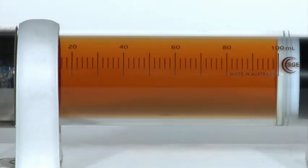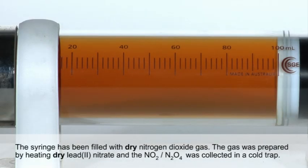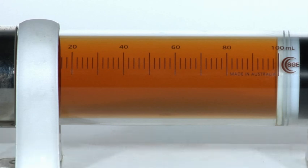Dry nitrogen dioxide was prepared for this demonstration by heating solid lead nitrate and collecting the gas formed in a cold trap at minus 60 degrees Celsius. Oxygen produced in the decomposition was allowed to escape to the atmosphere.